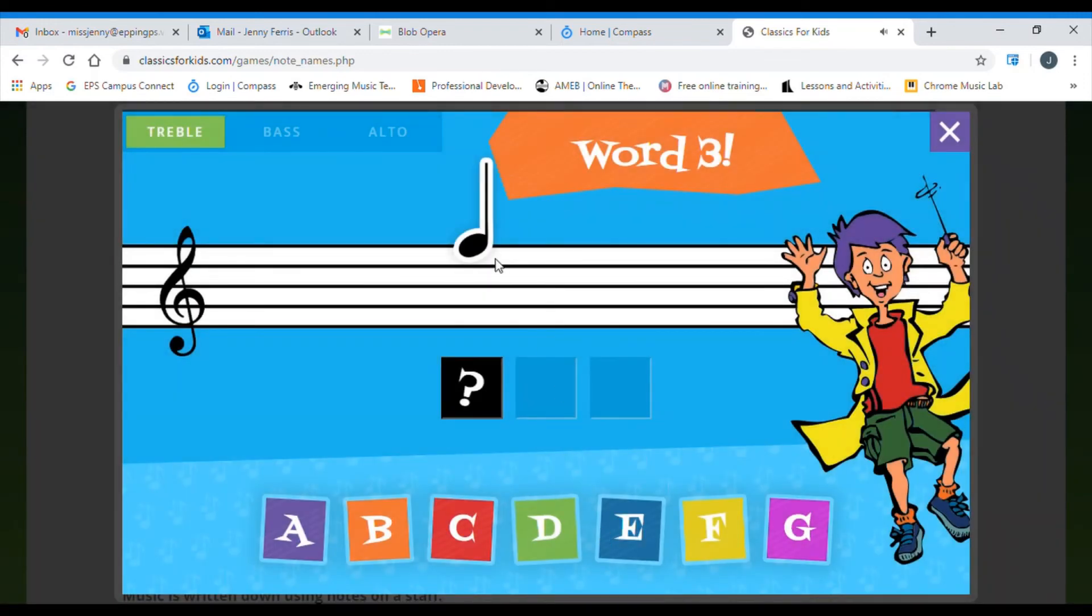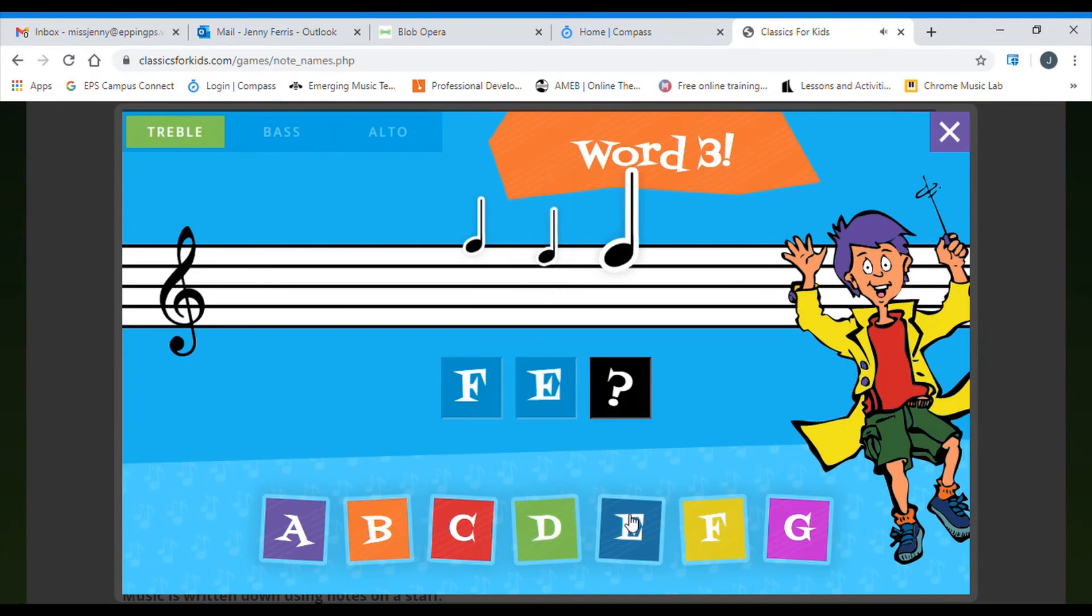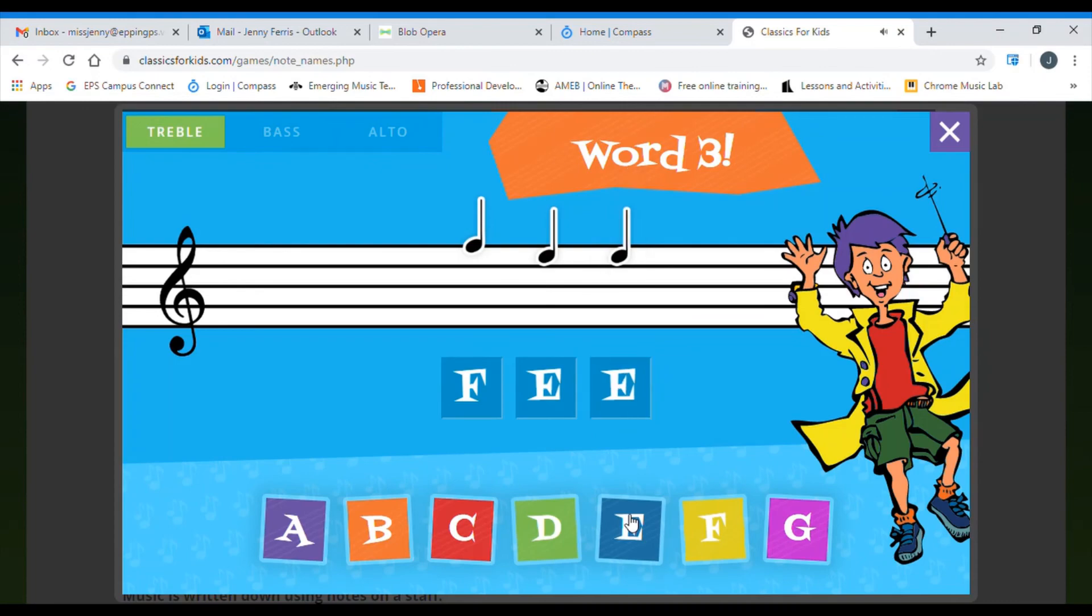Click on next word to continue. We have line five, Every Good Boy deserves fruit, F. We have space four, F-A-C-E. And we have another F-A-C-E. It's spelled out the word fee.